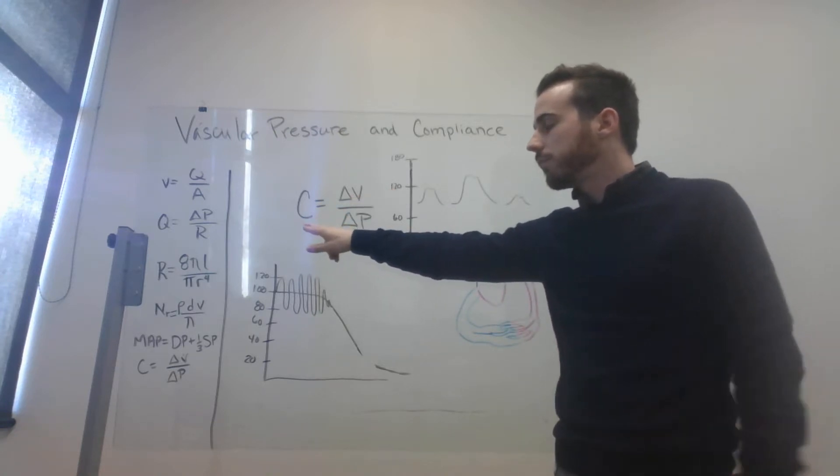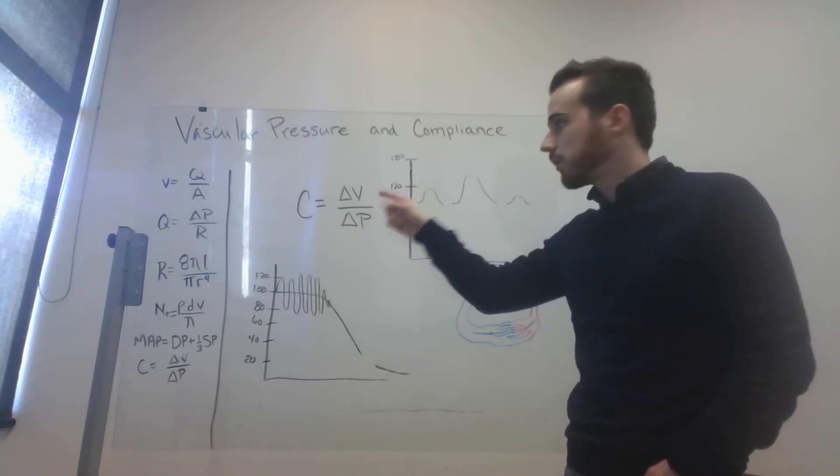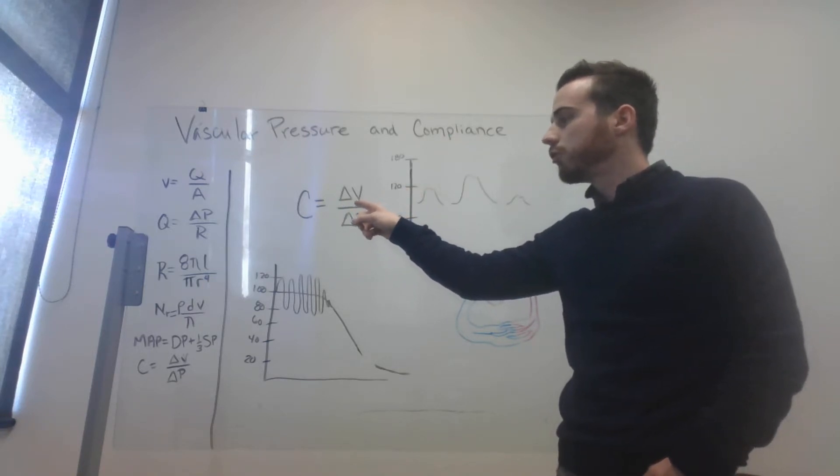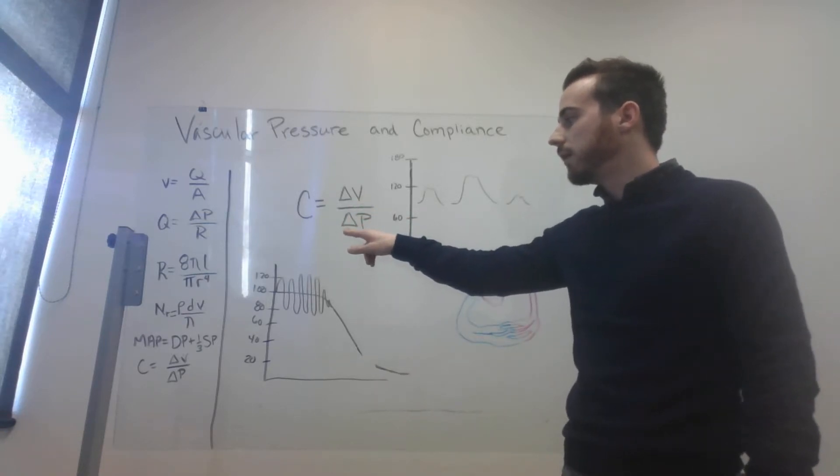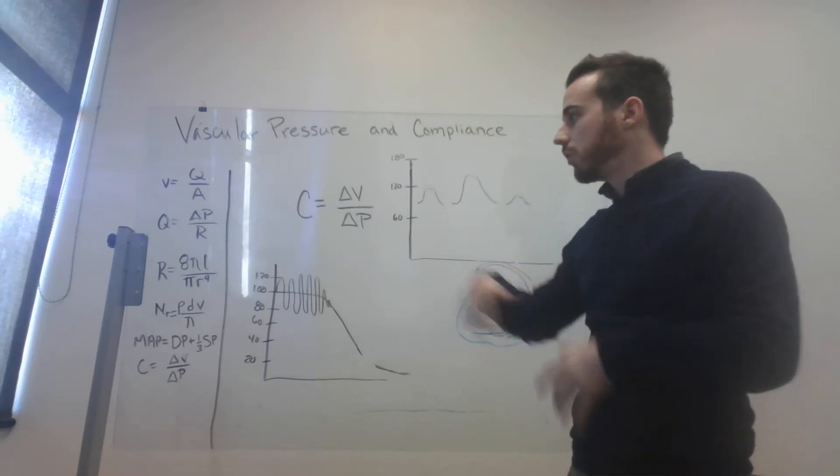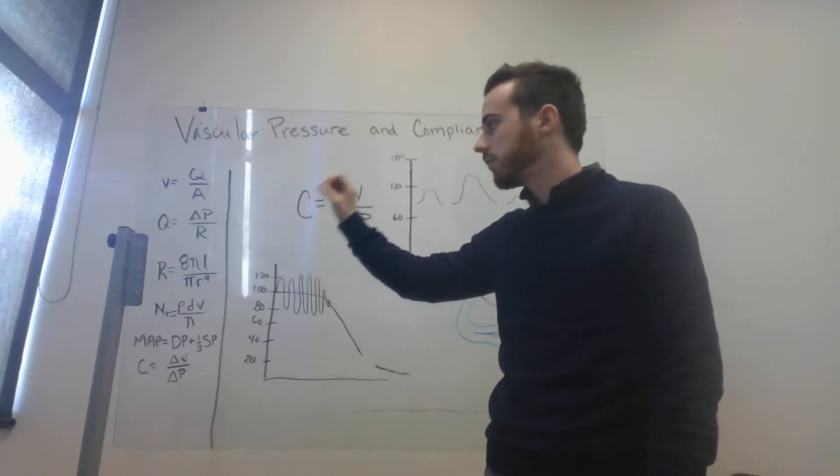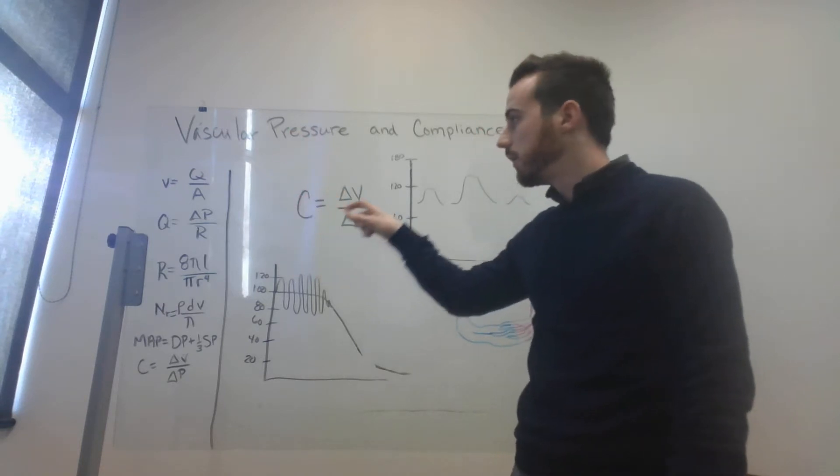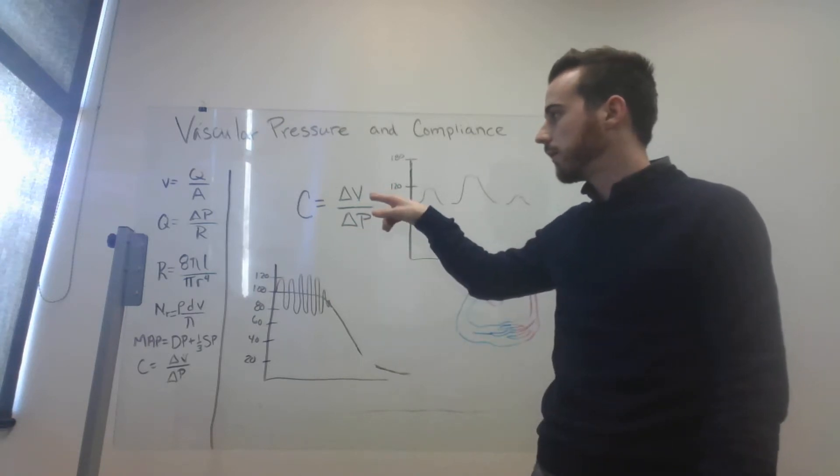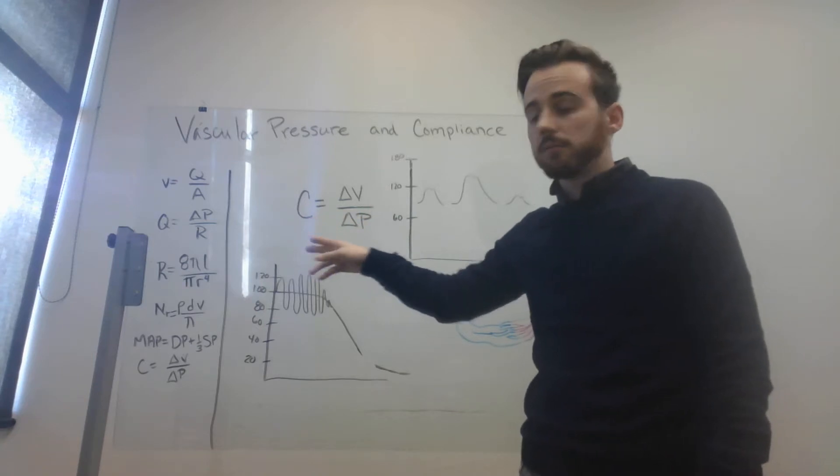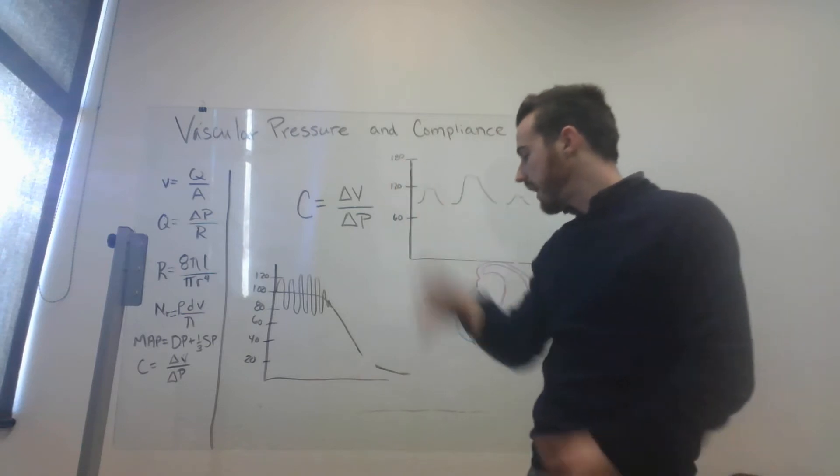This equation, compliance, is equal to the ability of the vasculature to deform. The amount its volume can expand divided by the amount of pressure change. So, essentially, what this is saying, in a relatively non-compliant, something that has a compliance of zero, no matter how much the pressure changes, the volume will not change. In something that's compliant, the volume will change as the pressure changes. That's that for compliance.